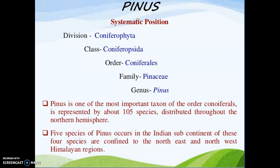Now we will come to Pinus. The systematic position: division of Pinus is Coniferophyta, class is Coniferopsida, order is Coniferales, and family is Pinaceae. Genus is Pinus. Pinus is the most important taxon of the Coniferales order. It consists of 105 species distributed throughout the northern hemisphere.